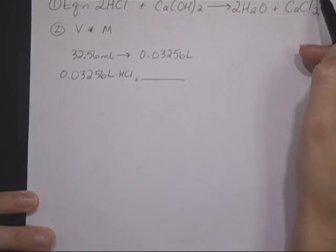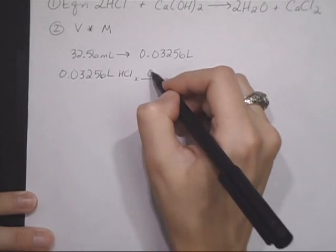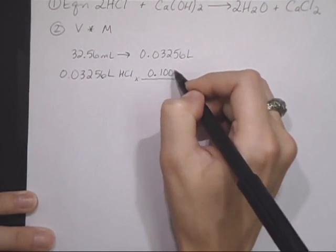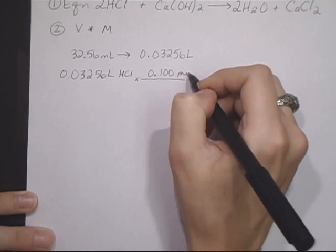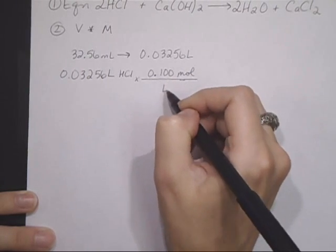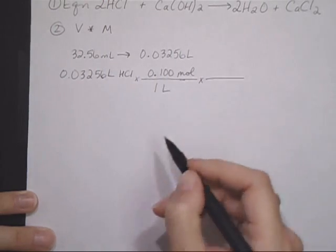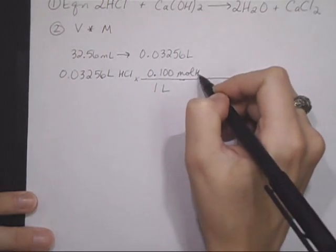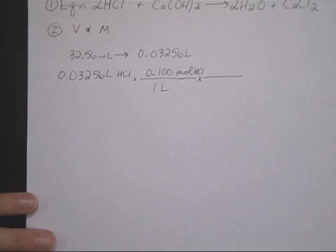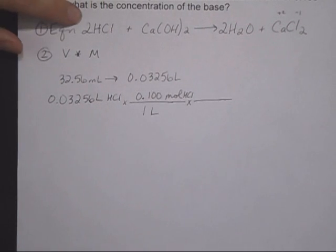So 0.03256 liters of HCl. Next, multiply it by the molarity. We know that this particular batch is 0.100 moles per liter. Make sure you're not writing the capital M there. I'll trip you up later. Next, we're in moles of HCl, so now we need to switch.